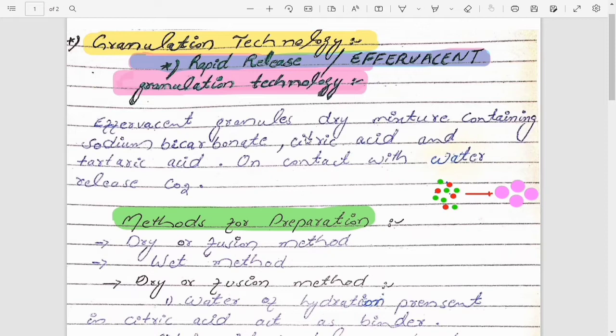So what are effervescent granules? These are the dry mixture of sodium bicarbonate, citric acid, and tartaric acid. When these granules come in contact with water, due to the reaction of sodium bicarbonate with water, the production of carbon dioxide gas occurs. This carbon dioxide gas leads to the effervescent release or disintegration of the granules.